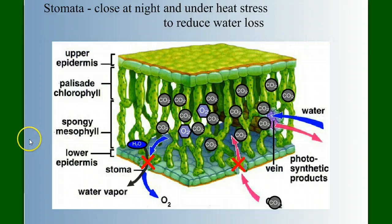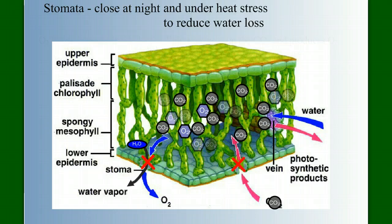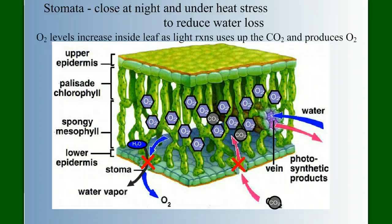Now, as photosynthesis progresses, we're going to consume carbon dioxide and produce oxygen, and so the composition of the air inside the leaf is going to change. As photosynthesis continues to progress, the levels of O2 are going to keep rising, and the levels of carbon dioxide keep going down. So the question is, why is that a problem?